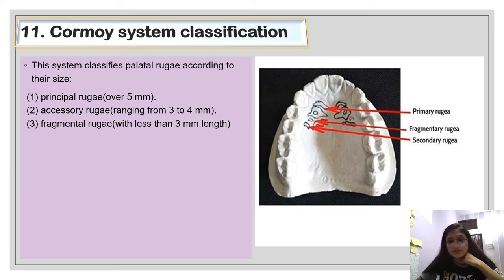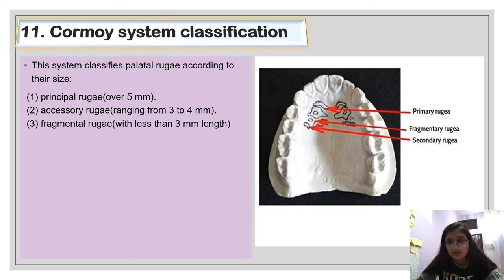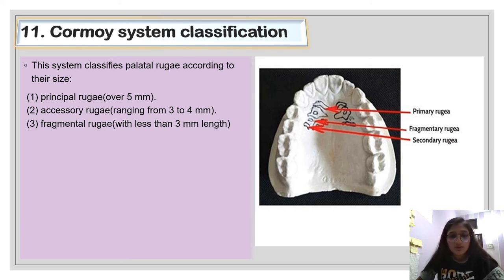The eleventh classification is the CROMI system, which classifies palatal rugae according to their size: principal rugae, accessory rugae, and fragmentary rugae. It is most similar to the previous classification. In the primary category they have principal and secondary; they have accessory as well. Fragmentary remains the same. The key difference is that CROMI used 3 mm as the threshold length.